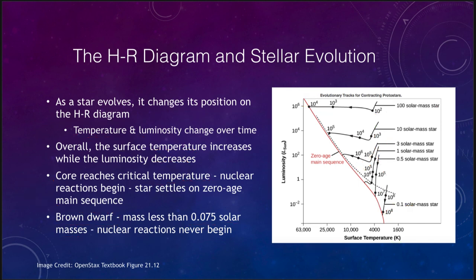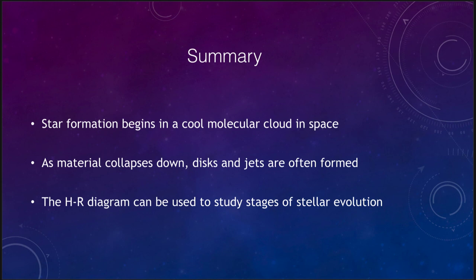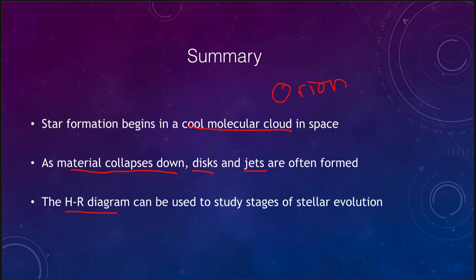In summary, star formation begins in a very cool molecular cloud in space — the Orion region was an example we looked at. As the material collapses down, you form a protostar and get a disk and jet. We can use the HR diagram to study the early stages of stellar evolution and later stages as well. That concludes our discussion of star formation — we'll be back next time for another topic in astronomy. Have a great day, everyone.